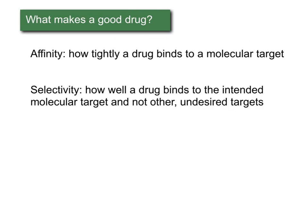What do we need to make a good drug? There are two factors that affect how well a drug works. The first is affinity — how tightly a drug binds to its molecular target. The tighter the drug binds, the more effective it will be, because you would need less of it to bind just as much of the target. The second is selectivity — how well a drug binds to the intended target and not to other targets. Selectivity is an important factor in side effects: if a drug is likely to bind to other proteins, it will have unintended consequences. So we want a drug with high affinity and high selectivity.